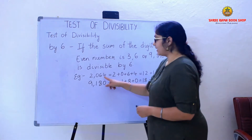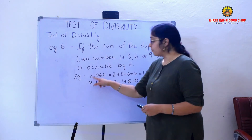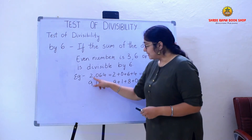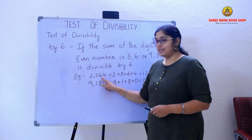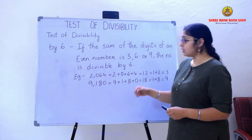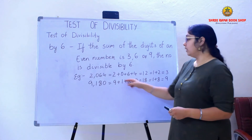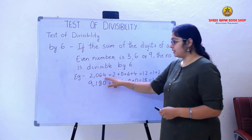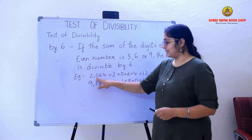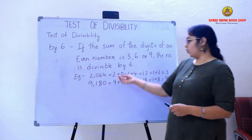Children, I have two examples on the board. Please have a look. The first example is 2064. In 2064, I am going to add all the digits: 2 plus 0 plus 6 plus 4.